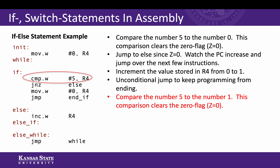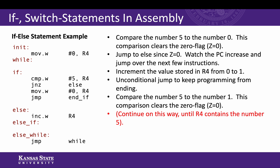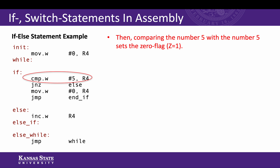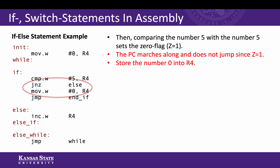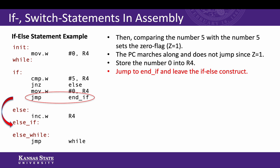Next, we compare the number five to r4 again. r4 is now containing one, so that comparison is going to clear the zero flag — Z equals zero — and we're going to continue this way, incrementing r4, until r4 contains the number five. At that point, comparing r4 with the number five sets the zero flag to Z equals one. The PC marches along; it does not jump since Z equals one, so it goes to the move instruction and stores the number zero into r4. Then we hit the unconditional jump and leave the if/else construct.